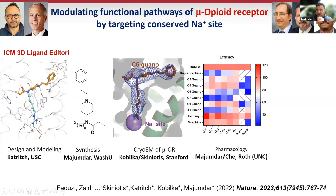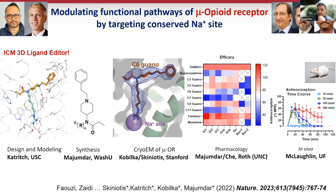The structure of this ligand in the mu-opioid receptor was solved by Skiniotis at Stanford, confirming atom-to-atom with 0.5 angstrom accuracy the conformation that we predicted. Most importantly, this compound predictably had very interesting pharmacology — C3 to C11 guanidino versions represent different linker lengths, C6 was the most potent, with very specific pharmacology that differentiated it from fentanyl. It completely abolished arrestin signaling and differentiates between different G-protein subtypes as well.